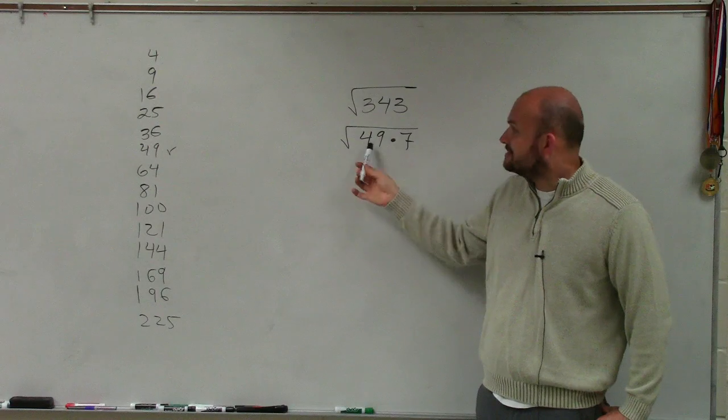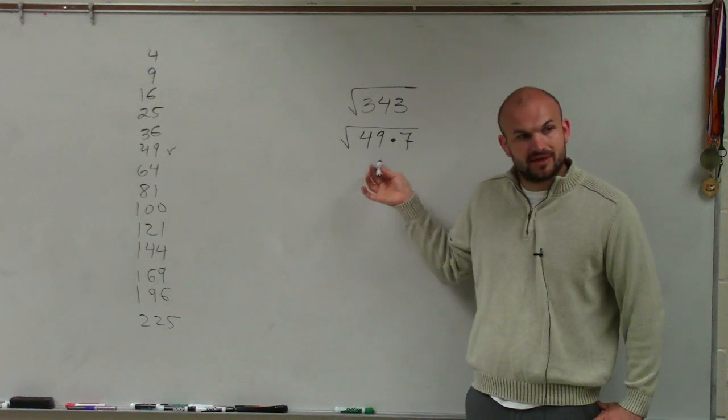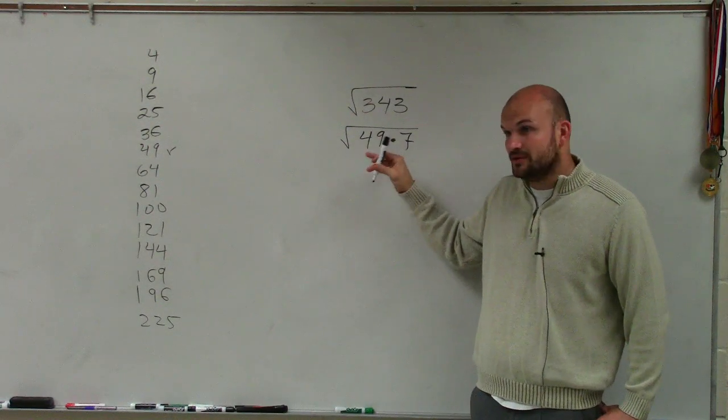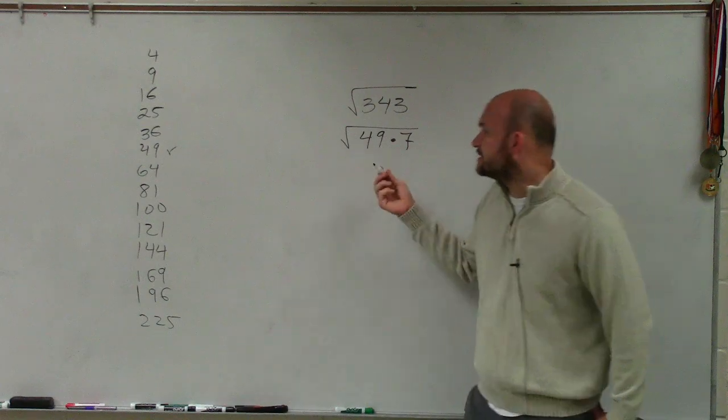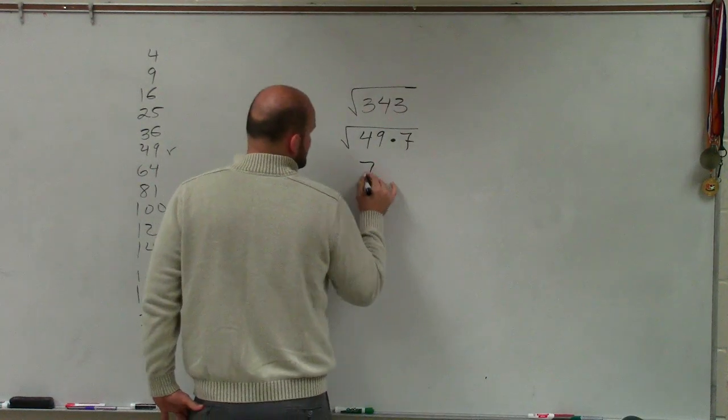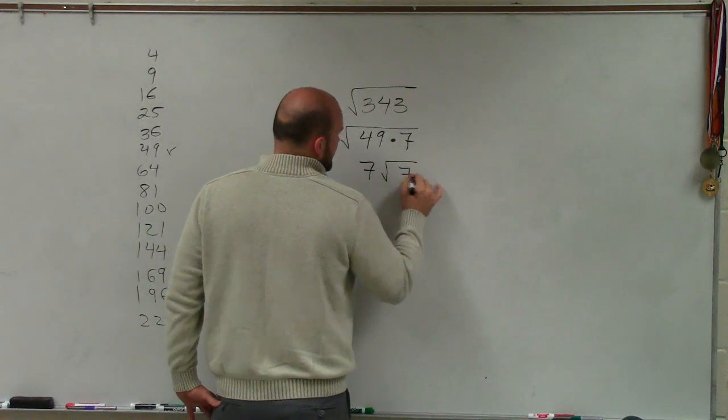Then what's nice about this is now I can take the square root of one of these numbers, because this is a square number, that's 49. Square root of 49, which I can take the square root of, which is 7 times the square root of 7.